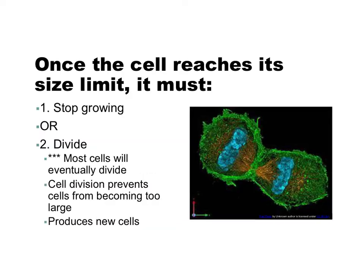Once the cell reaches its size limit, it must do one of two things: it can stop growing, or it has to divide. Most cells eventually divide. Cell division prevents cells from becoming too large, and it's how we produce new cells in our bodies.